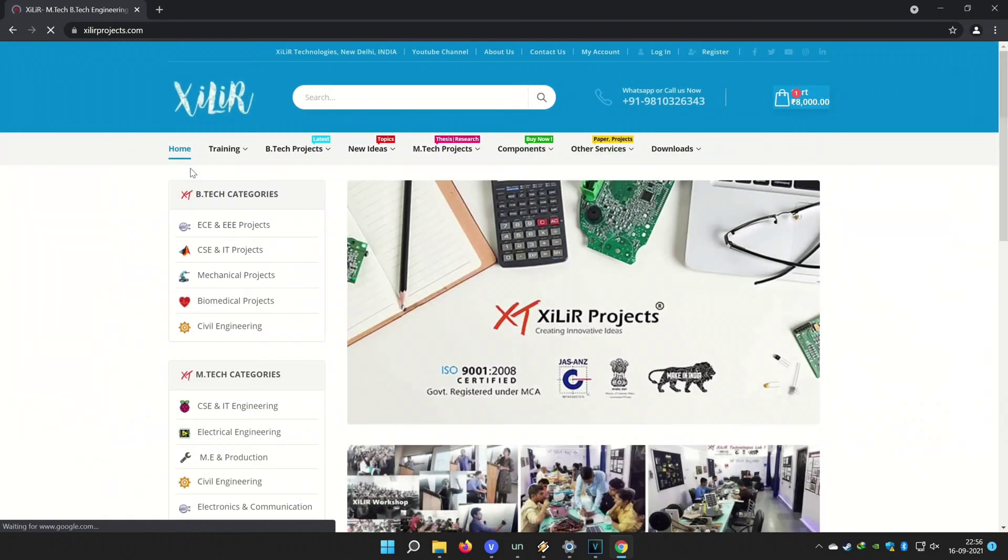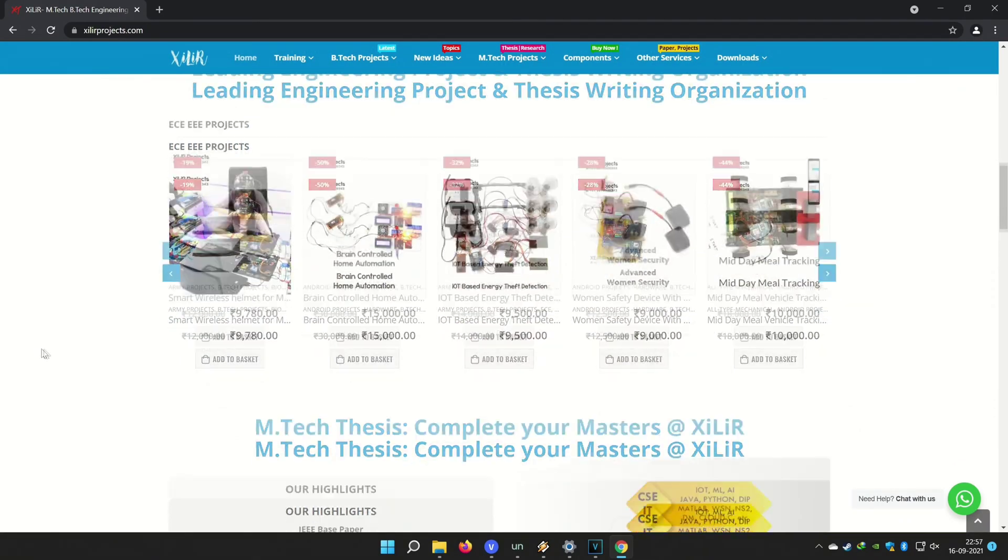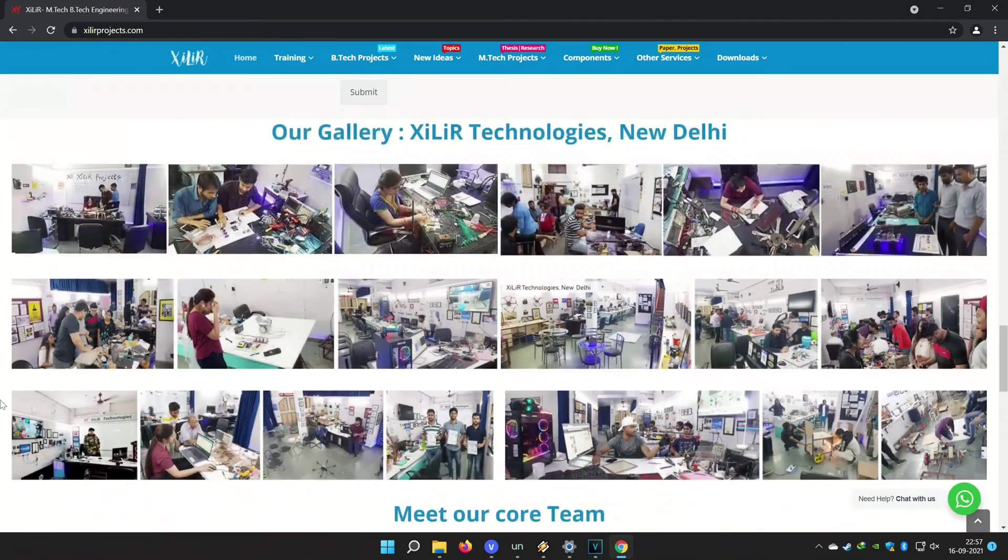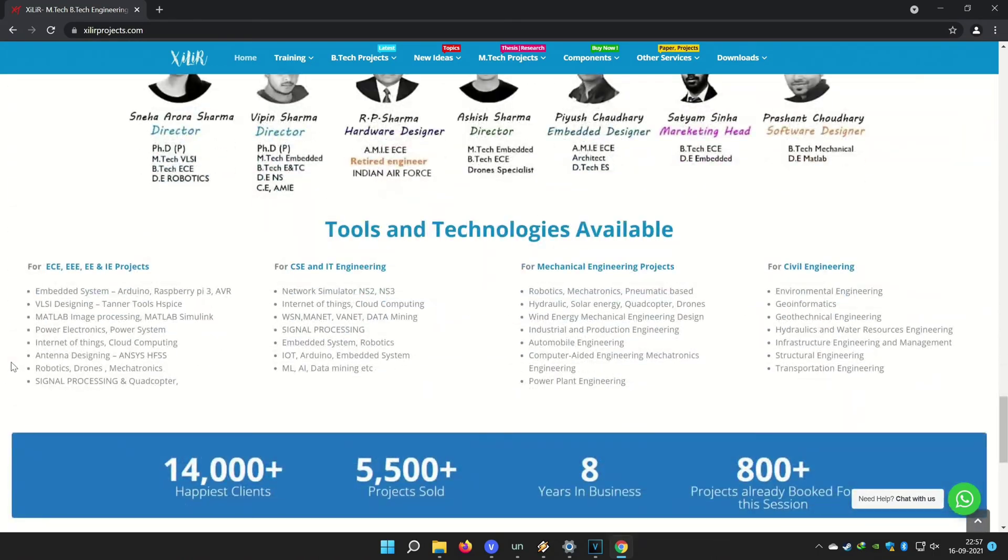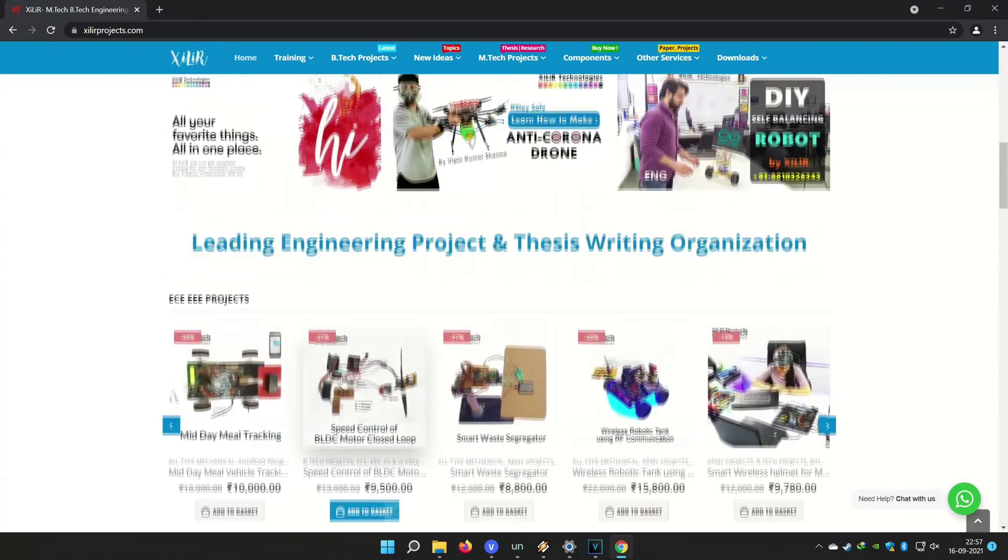Friends, you can search Zara Technologies on Google and find our website. On the website you will find many things about engineering projects like PPTs, reports, documents, codes, tutorials, etc. You can also come here for M-Tech projects, B-Tech projects, PhD projects, and submit your requirement to make custom projects.